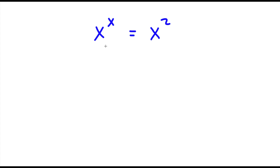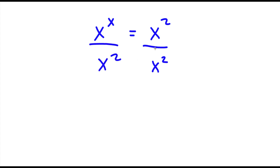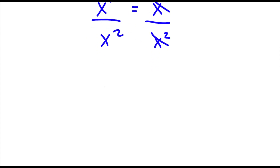Alright, so I have x to the power of x is equal to x to the power of 2. Now what I'm first going to do is divide both sides by x to the power of 2. So these two will cancel out and now I will be left with x to the power of x over x to the power of 2 is equal to 1.